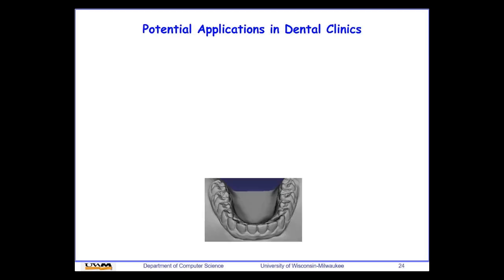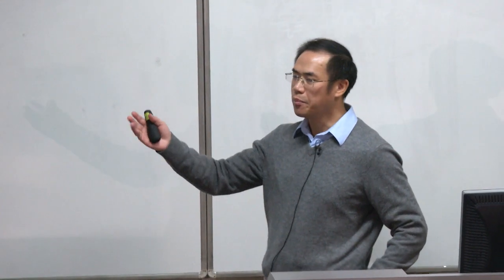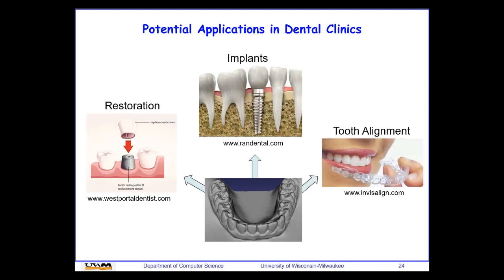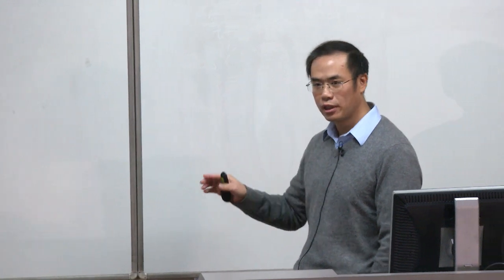With 3D models from active scanning, we can do many dental applications — implant design, dental restoration, and teeth alignment. For implant design, we also need to incorporate CT of the patient to design the implant. The 3D surface model alone is not sufficient; we must also consider internal structures from CT, which leads to volumetric reconstruction.